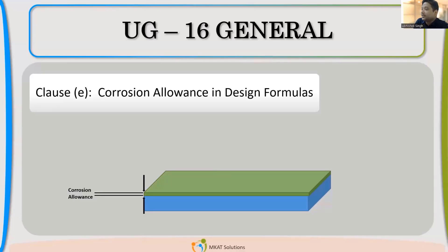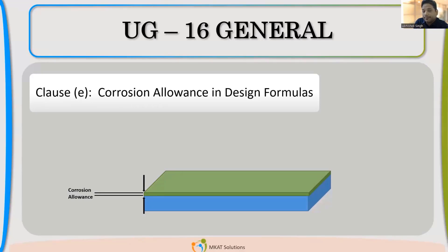Let us understand it in a better way by taking one example. See UG 27. What we are trying to say here is: let us say I have a vessel which I have to design with ID 2000 and the Corrosion Allowance applicable is 3 mm. If you remember the formula of UG 27, which it is highlighting — the formula is P × R divided by (SE minus 0.6P). There is an R term there. R is defined as inside radius. So if my ID is 2000 and Corrosion Allowance is 3 mm, what will be my R value for that formula?